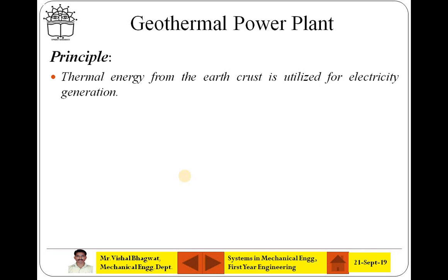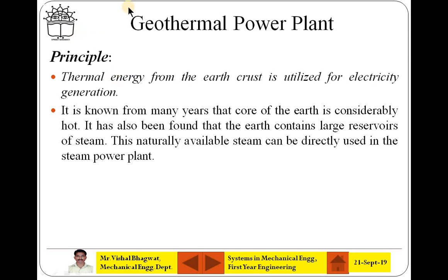One must understand the principle of the geothermal power plant. Geo means earth and thermal means heat. So, thermal energy which can be obtained from earth crust, and that is utilized for electricity generation. It is known from many years that core of the earth is considerably hot, and it has also been found that earth contains large reservoir of steam. This naturally available steam can be directed for the steam power plant.